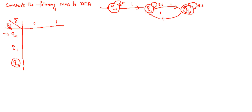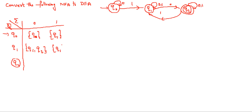Now we see what are the next moves on applying 0 and 1 for Q0, Q1, Q2. On applying 0 on Q0, you are going to Q0 only. On applying 1 on Q0, you are going to Q1 only. On applying 0 on Q1, you are going to Q1 and also Q2. On applying 1 on Q1, you are going to Q1 only.